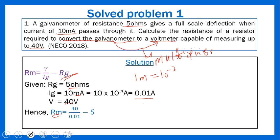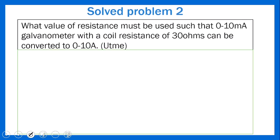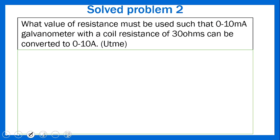Calculating: 40 / 0.01 = 4000, then subtracting 5 gives RM = 3995 ohms in series. That is the answer to Question 1.